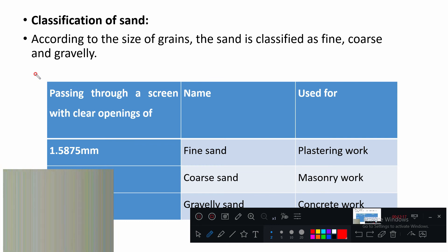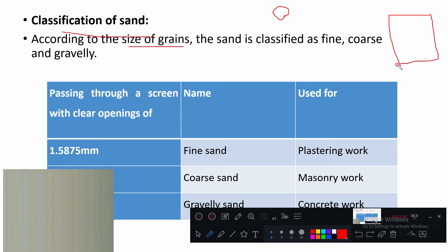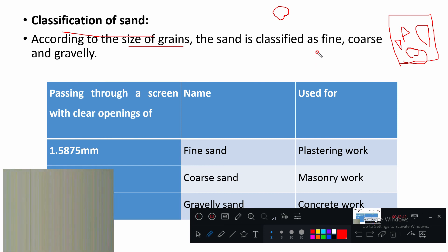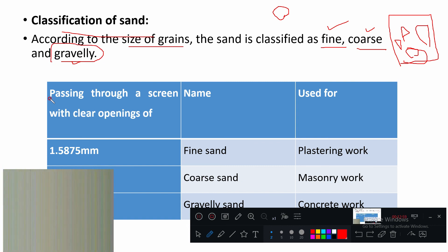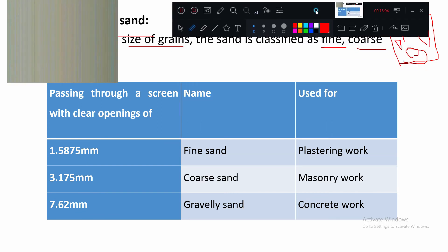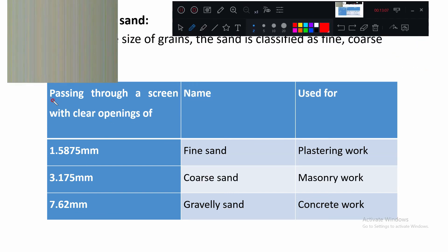Sand can be classified according to size. If you take one kg of any sand, all particles will not be of the same size. Based on average particle size, sand can be classified as fine, coarse, or gravelly. Fine means the average size is very small; coarse is medium to more; and if totally larger particles are present, it is called gravelly or gravel.